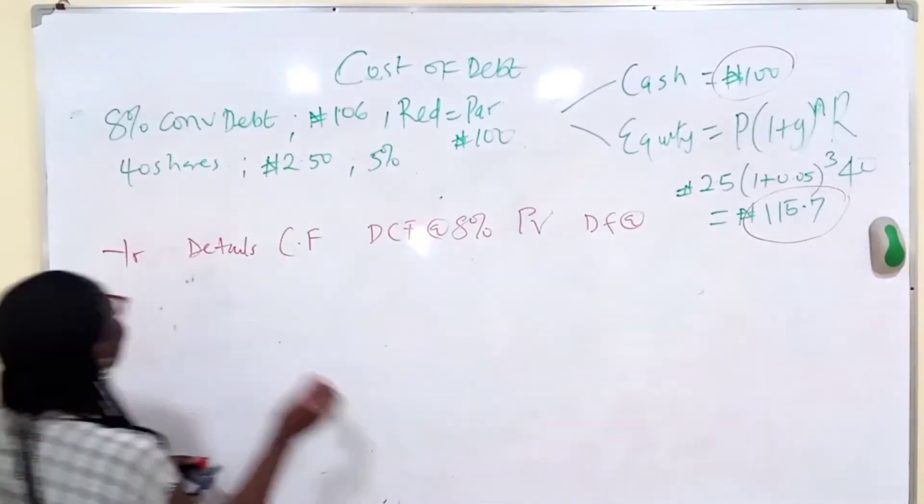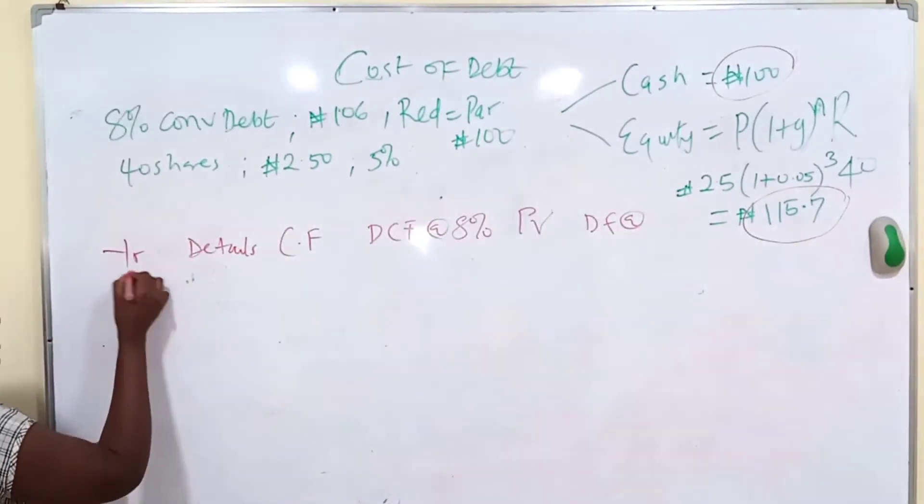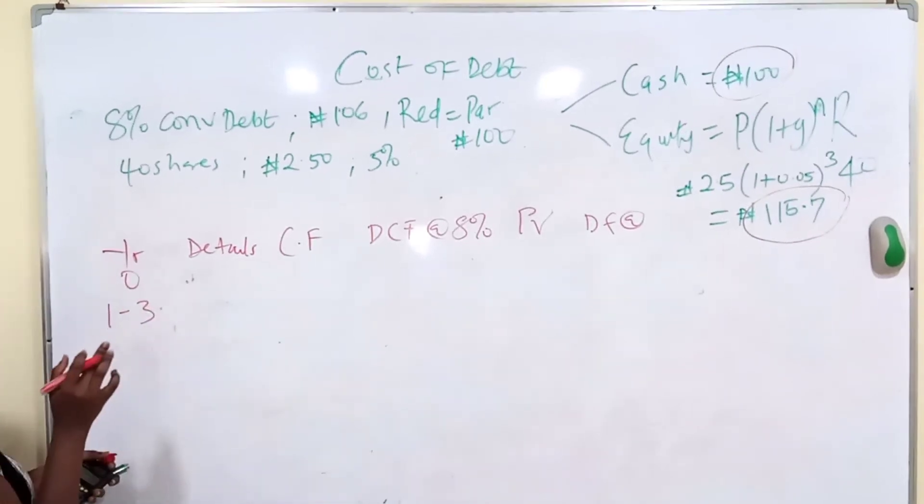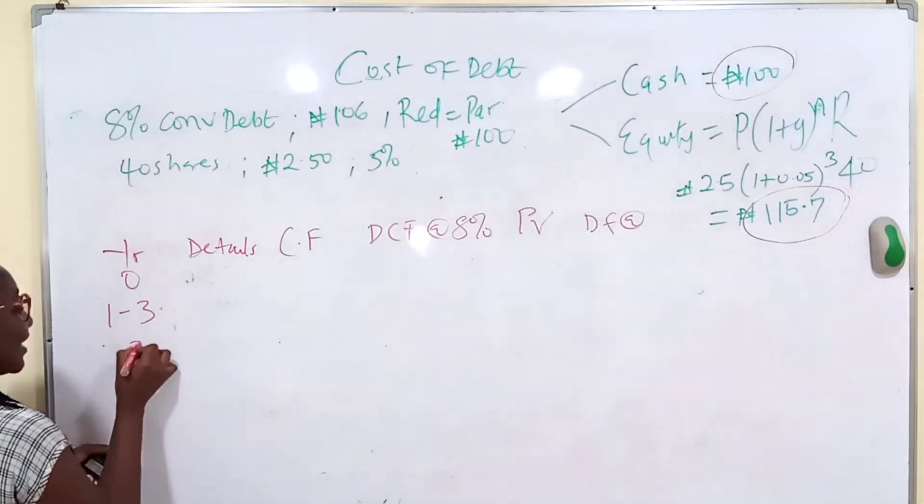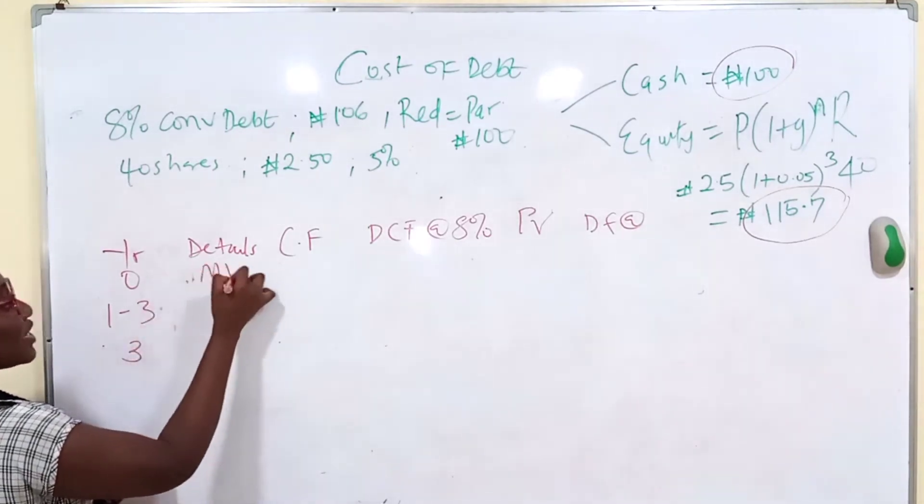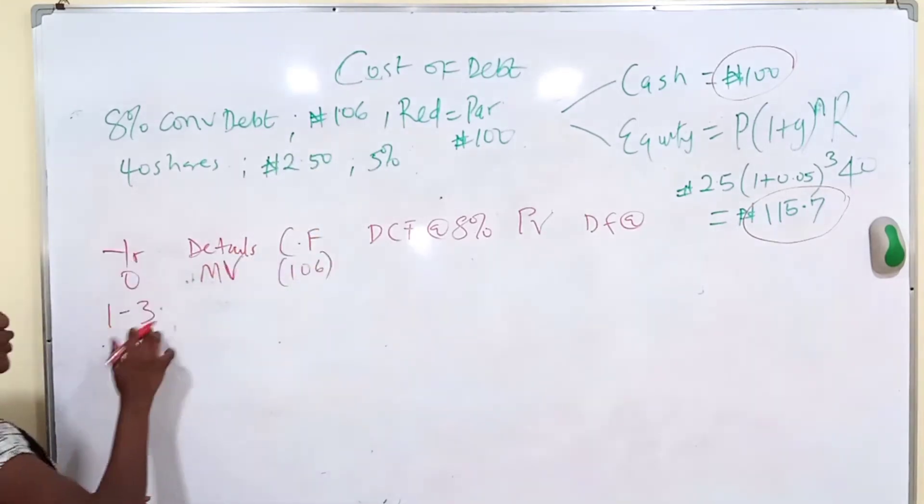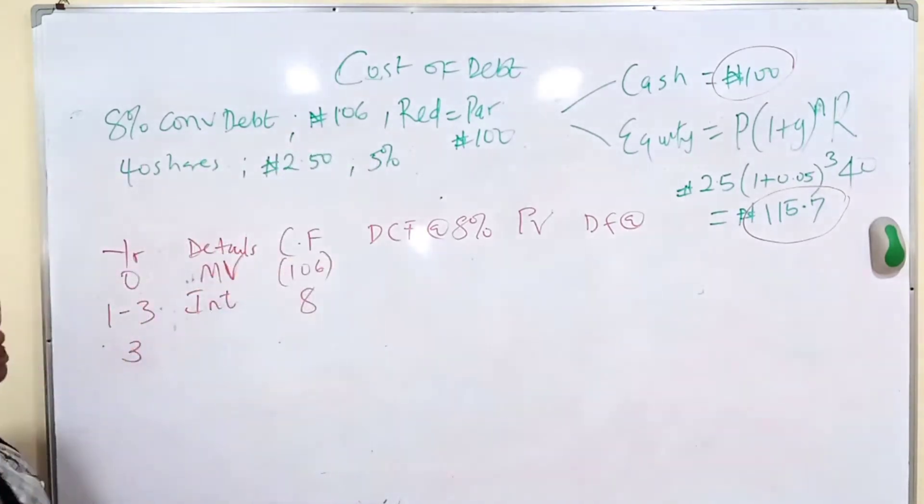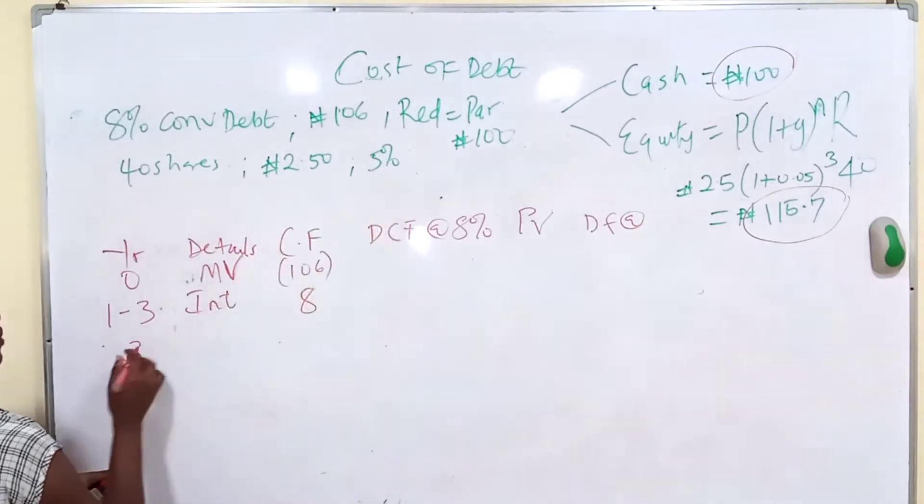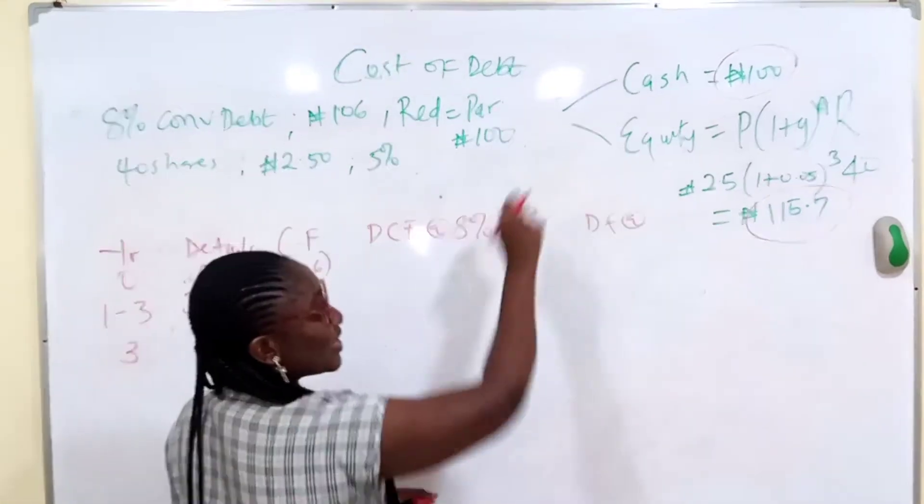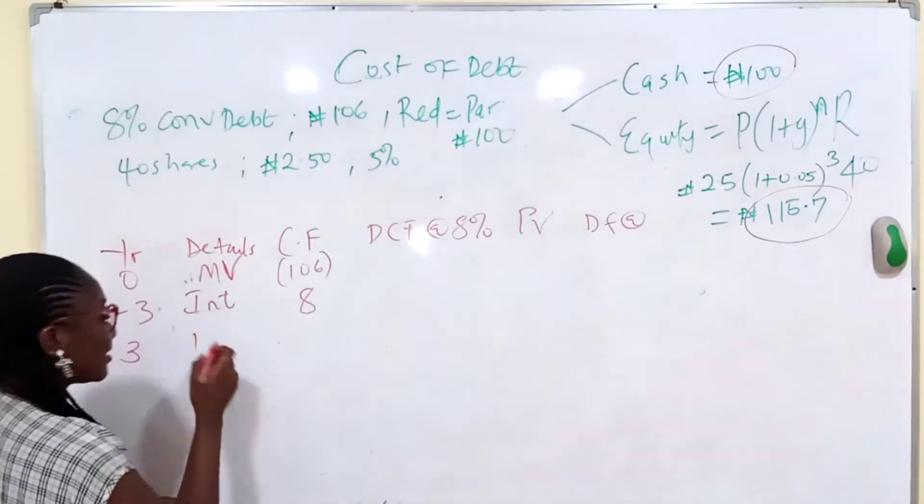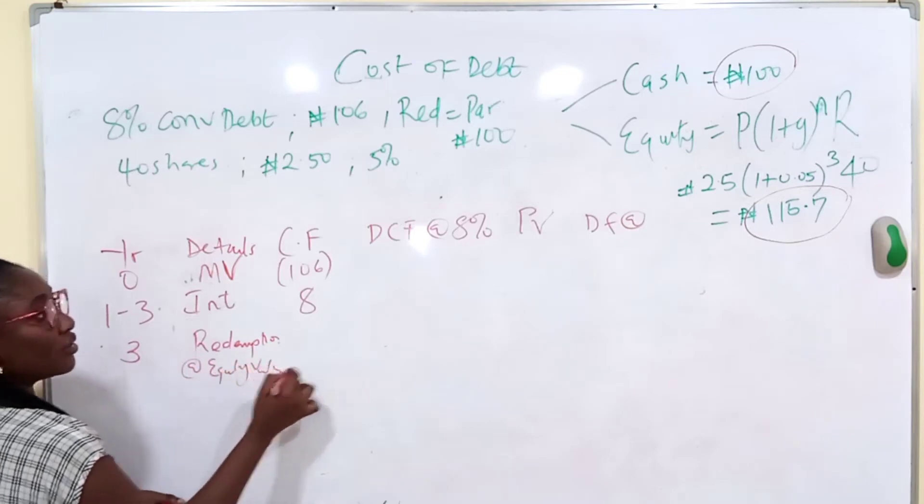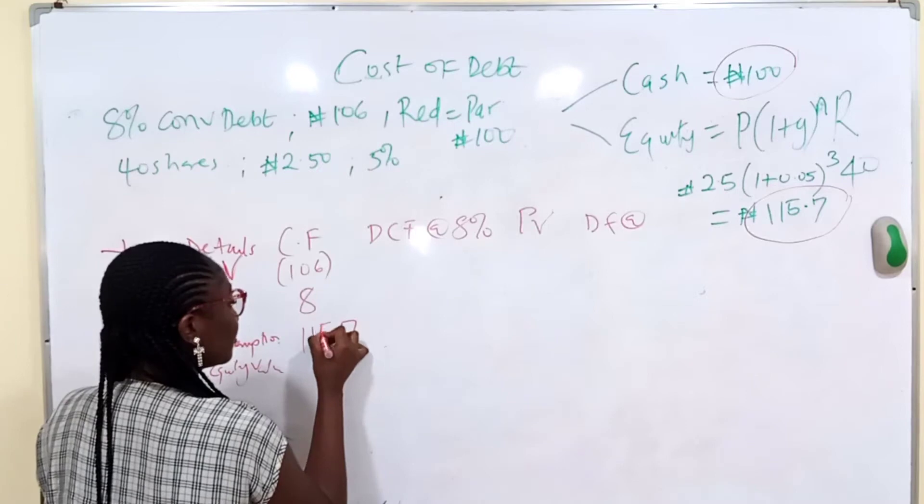You will go higher. So for year 0, year 1 to 3. So here, you drop the market value of the debt, which is 106. So in this 1 to 3 years, we pay interest. 8% times 100, we are paying 8. Don't forget to put your 8. In year 3, we will redeem. We won't redeem at cash, we will redeem at equity. Because the rational person will pick redemption at equity value, 115.7.